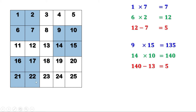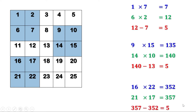Let us take the third square of 4 numbers. 16 into 22 is 352. 21 into 17 is 357. The difference is again 5. So we can see that when we take a square of 4 numbers like this, the difference of the diagonal products is always the same, and that is equal to 5. Therefore, the first part of the answer is yes.